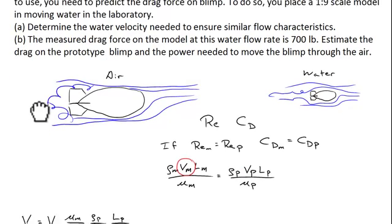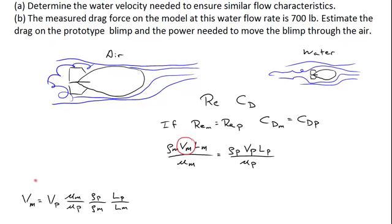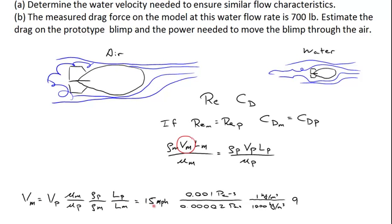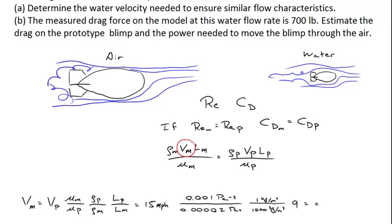Let's rearrange this equation and figure out the velocity of the water we need to flow over the model. Rearranging, we find that it's the velocity of the prototype times the ratio of viscosities (model viscosity over prototype), the ratio of the densities, and the ratio of the length scales. Plugging in numbers: the full size blimp travels at 15 miles an hour, here's the viscosity of water and the viscosity of air, here's the density of air and water, and the prototype is nine times bigger than the model — giving us a value of 6.75 miles per hour. This is the speed needed to have water moving over the model blimp to ensure similar flow characteristics between the model and the full size blimp.